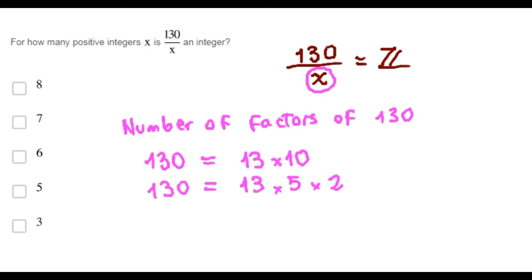So, the prime factorization of 130 is 13 to the first power times 5 to the first power times 2 to the first power. The next step is to add 1 unit to each of the exponents.